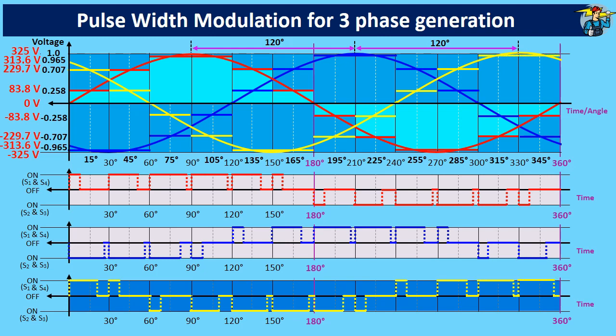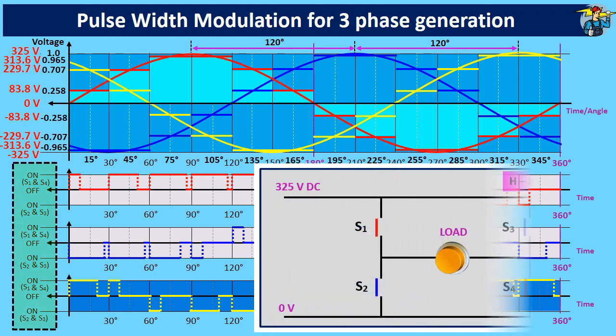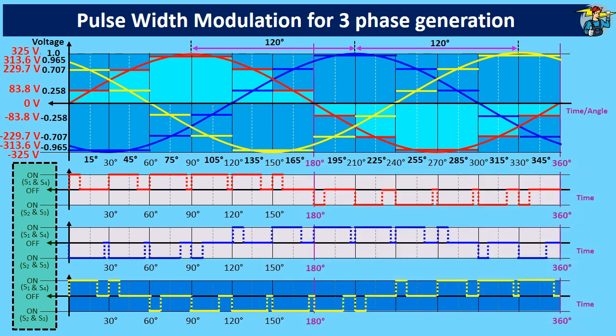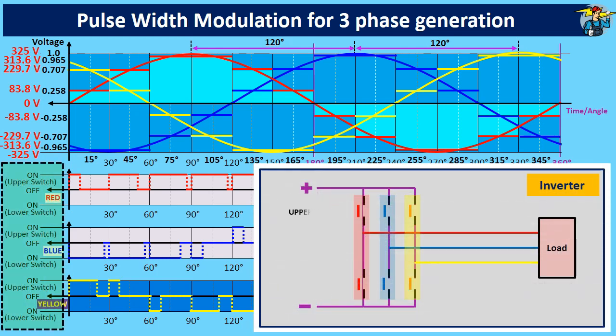To get these three phase voltage values using IGBT switches in an inverter, you need to do little default programming on the microcontroller now. Instead of switches S1, S2, S3 and S4, upper IGBT switches and lower IGBT switches should be used.